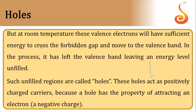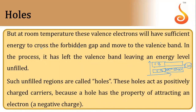As we know about conduction band and valence band — these are the conduction band and valence band. We are discussing semiconductors. In the valence band, electrons are present. When the temperature increases, these valence electrons will have sufficient energy to overcome the forbidden energy gap and move to the conduction band.